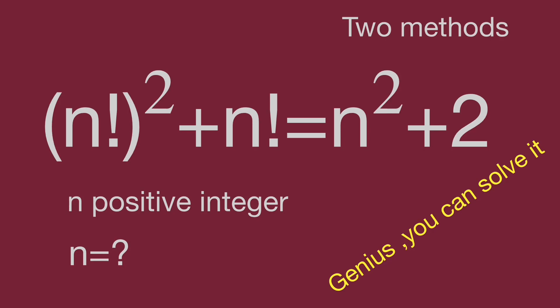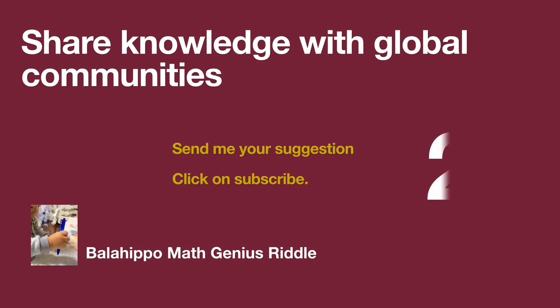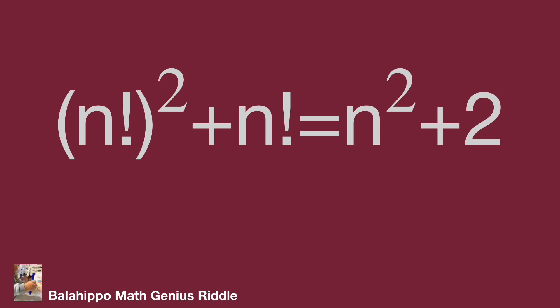Would you please solve it? Pause the video and find the value of n when you are ready. Keep watching the video to get the result. The question is n factorial squared plus n factorial equals n squared plus 2. There are n factorial terms in this equation. Before solving the question, let's take a look at what a factorial is.